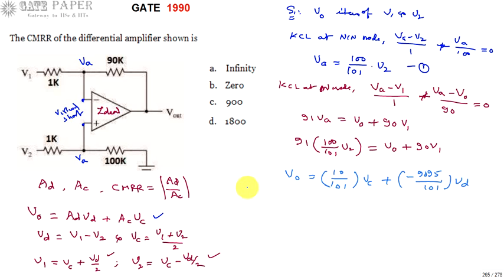AD is equal to minus 9095 divided by 101. And AC, from this one, CMRR is indicated by modulus. We are interested only in magnitude. CMRR is equal to 90. The right answer is C. The answer to this question is C. Thank you.